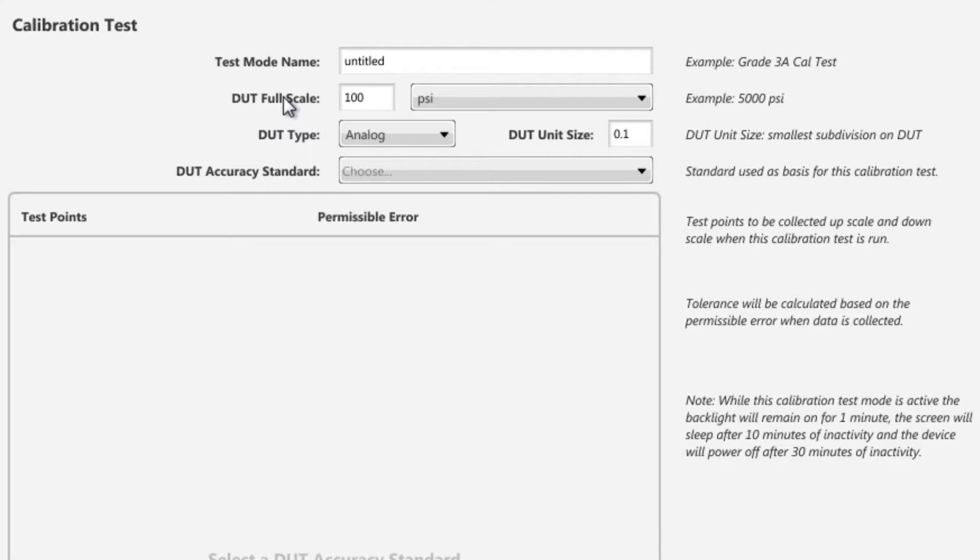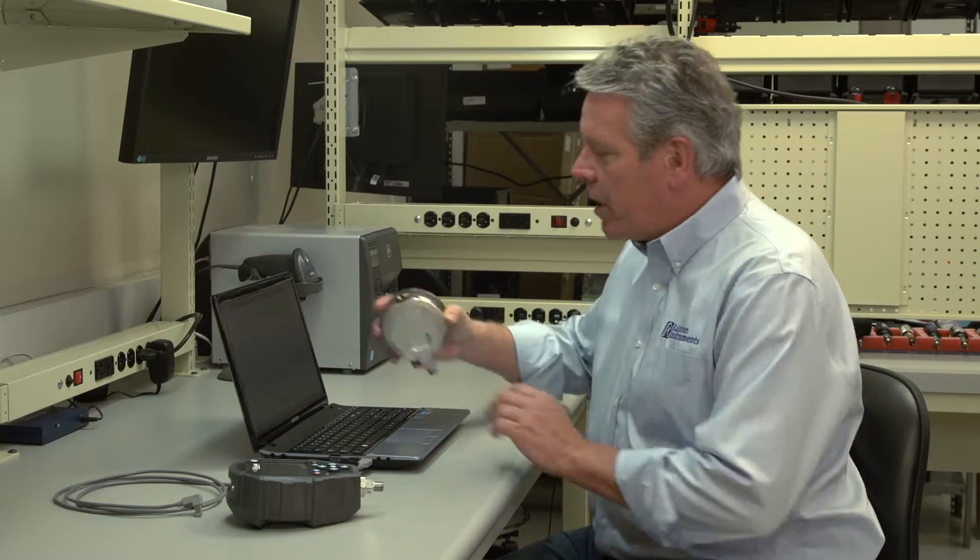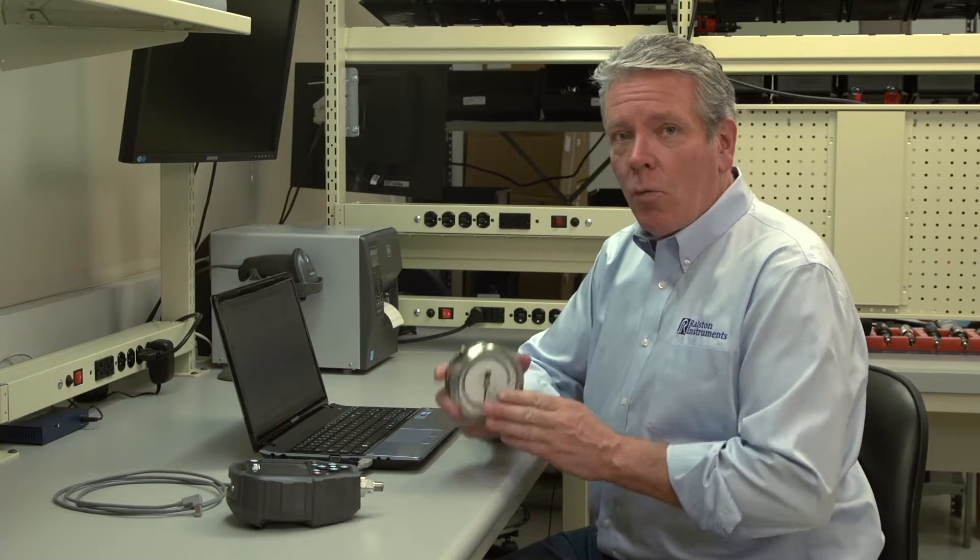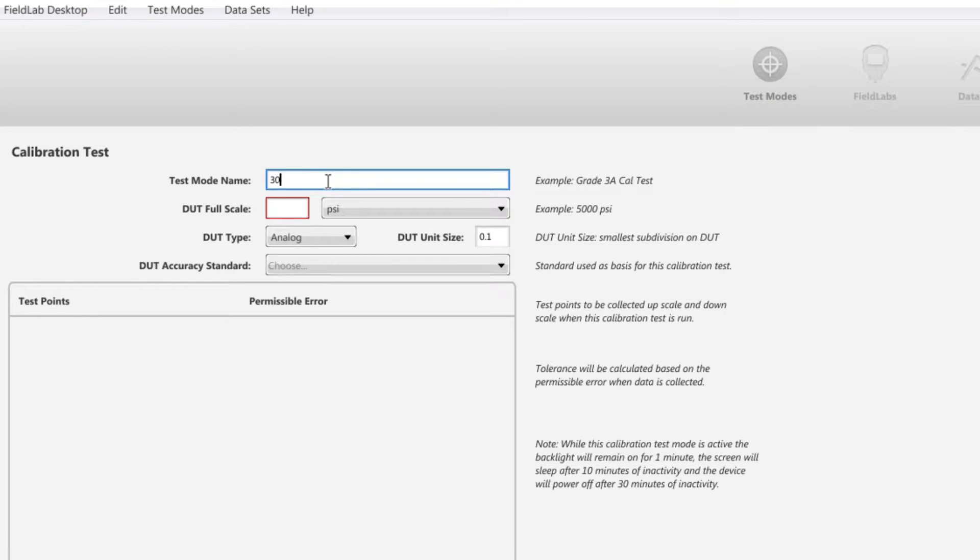First, we'll name the test. Since we plan on calibrating a series of 30 PSI analog gauges, we'll name it 30 PSI CalTest.